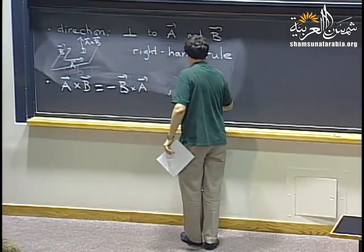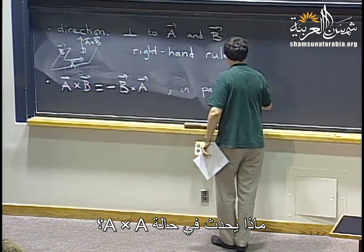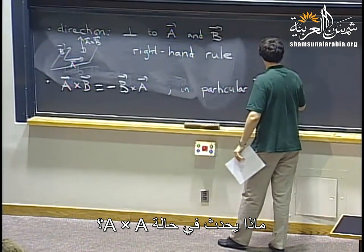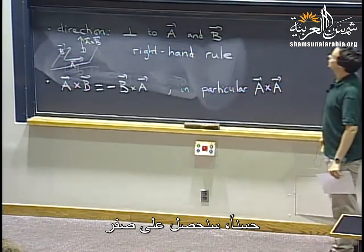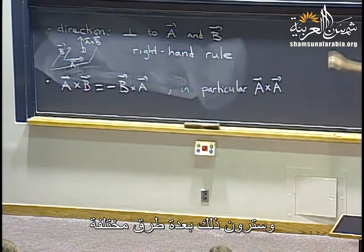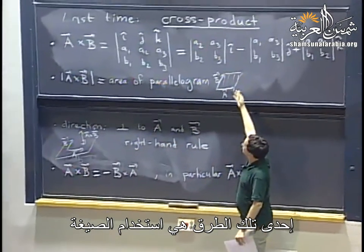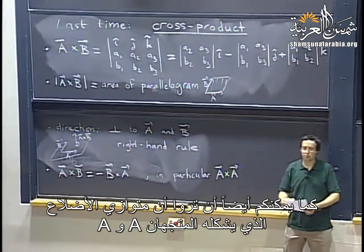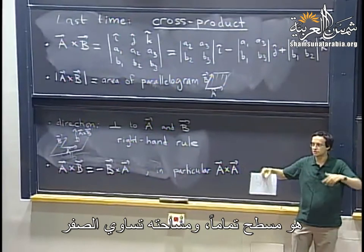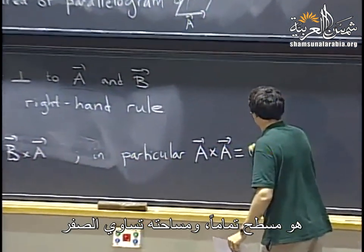In particular, a cross a equals zero. You can see this from the formula, or geometrically: the parallelogram formed by a and a is completely flat with area zero, so the result is the zero vector.